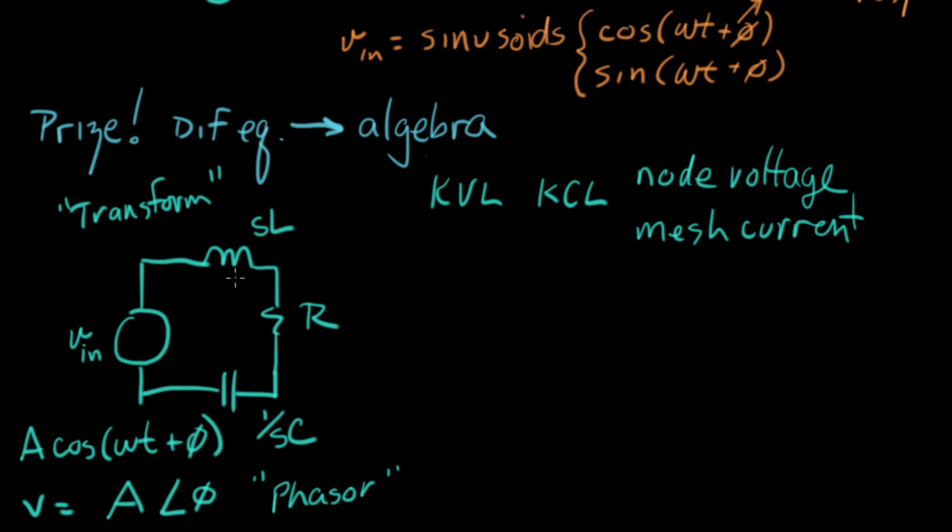And in a future video, we'll justify why we can make this transformation and what this means. The big payoff here is I'm going to write a KVL equation around this loop. And watch what happens. Watch how easy this is. It's amazing.